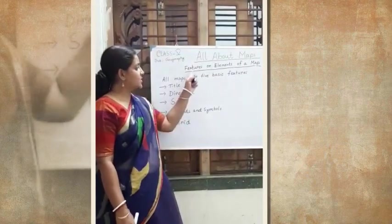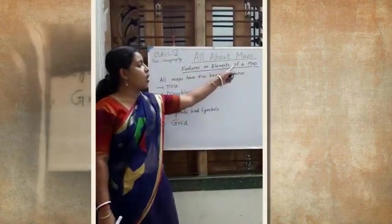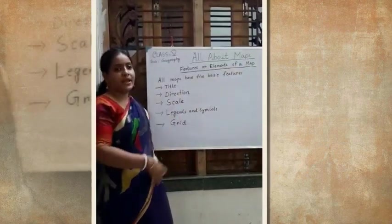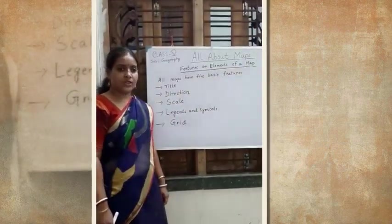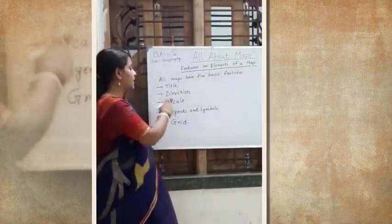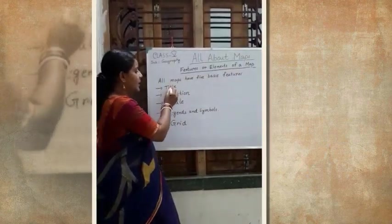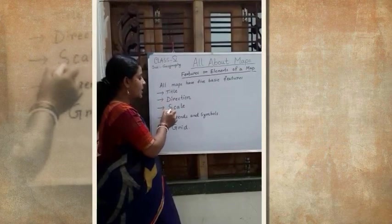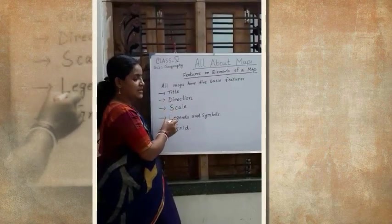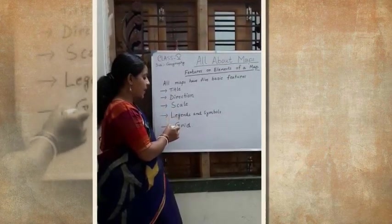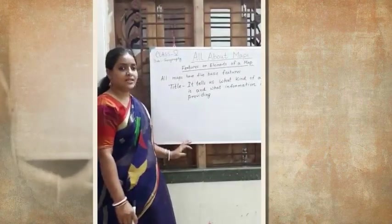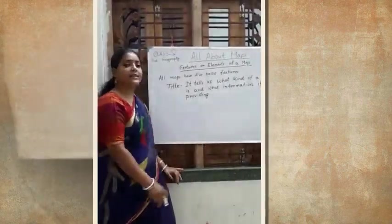Now, the features or elements of a map. All maps have five basic features. They are number one title, number two direction, number three scale, number four legends and symbols, and number five grid. Let us discuss the first feature, that is title.